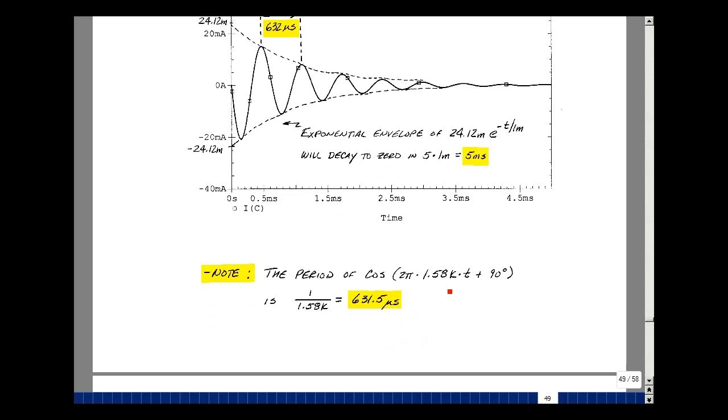Take our cosine function, and let's figure out what its rate is. Take the frequency in hertz, which is 1.58 times 10 to the 3. The reciprocal of that, you get 631.5 microseconds. So again, almost exactly the same number I have here.